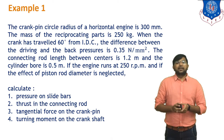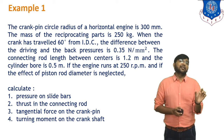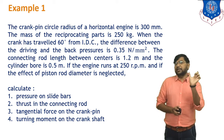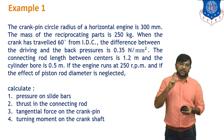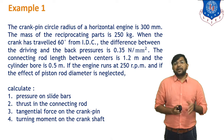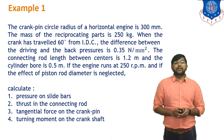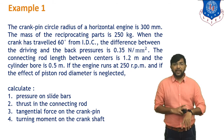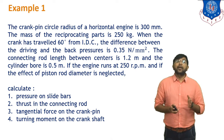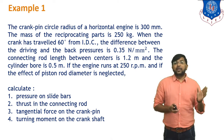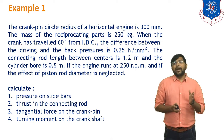The crank pin circle radius of the horizontal engine is 300 mm. Since this is a horizontal engine, we have to neglect the effect of the weight of the piston. The crank radius r = 300 mm. The mass of the reciprocating part is 250 kg. The crank has traveled 60 degrees from inner dead center, so theta = 60 degrees.